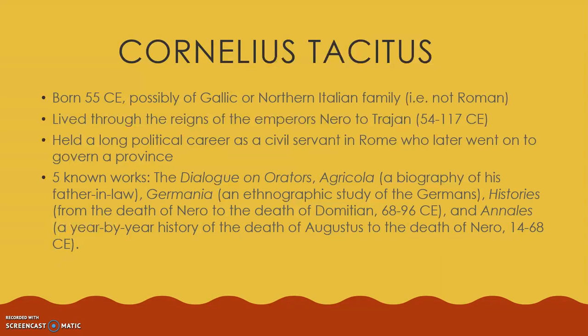He has another work called the Histories, which is essentially a history from the death of Nero up through the death of Domitian, one of the later emperors. Nero dies in 68, at which time Tacitus would have been 13, so he's talking about events he himself might have remembered. Then the Annales is a year-by-year history — that's what 'annales' means, from which our English word 'annals' comes — covering the death of Augustus up to the death of Nero, roughly 14 to 68 CE.